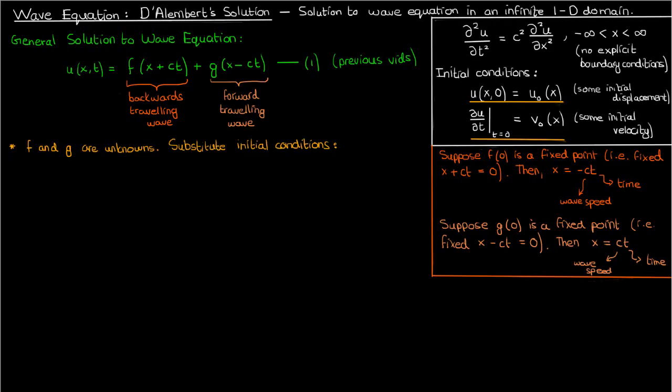So let's start our substitutions. We know that at t equals 0, u is just u0 of x, which means that u0 of x is just f of x plus c times 0 plus g of x minus c times 0. Therefore, that means u0 of x is just the sum of f of x and g of x. I'll call this equation 2.